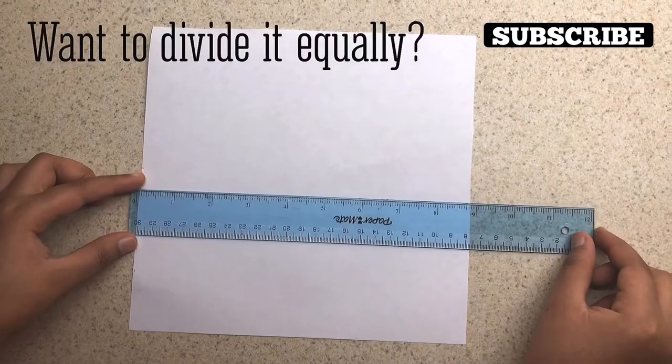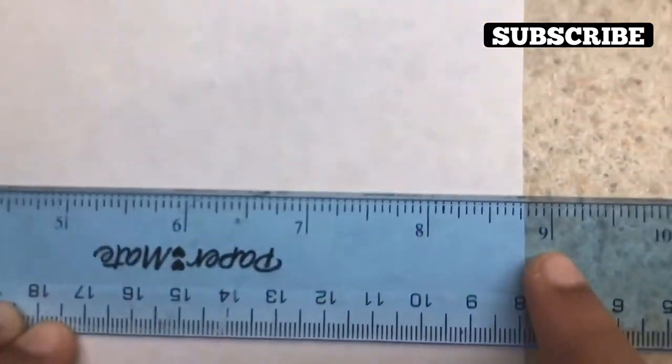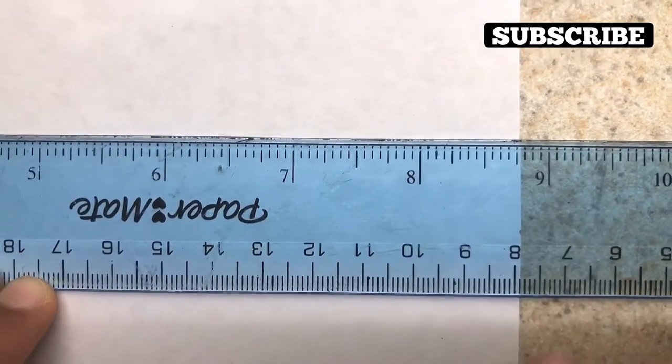You can clearly see right off the bat that the 9 inch mark is not lining up with the paper. But this trick will work.